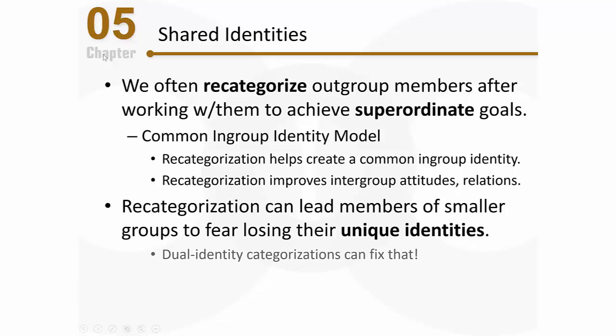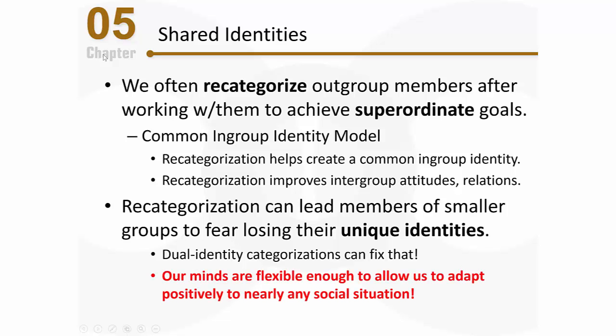What's great is that in these situations, they can create a dual identity. Instead of simply re-categorizing themselves as American, they can re-categorize themselves as Italian Americans, Latino Americans, or German Americans. This allows them to preserve their in-group as Italians or Latinos, while continuing to have an in-group as Americans — and they also have this new in-group they've created. It's a form of mental flexibility that allows us to re-categorize our social situation to fit our needs. Our minds are flexible enough to allow us to adapt positively to nearly any situation.